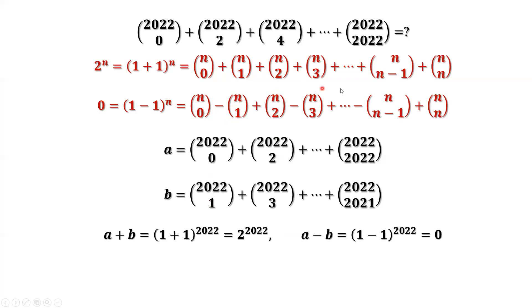So the right hand side is a minus b. a minus b equals 1 minus 1 to the power n, which is 0. So a minus b equals 0.